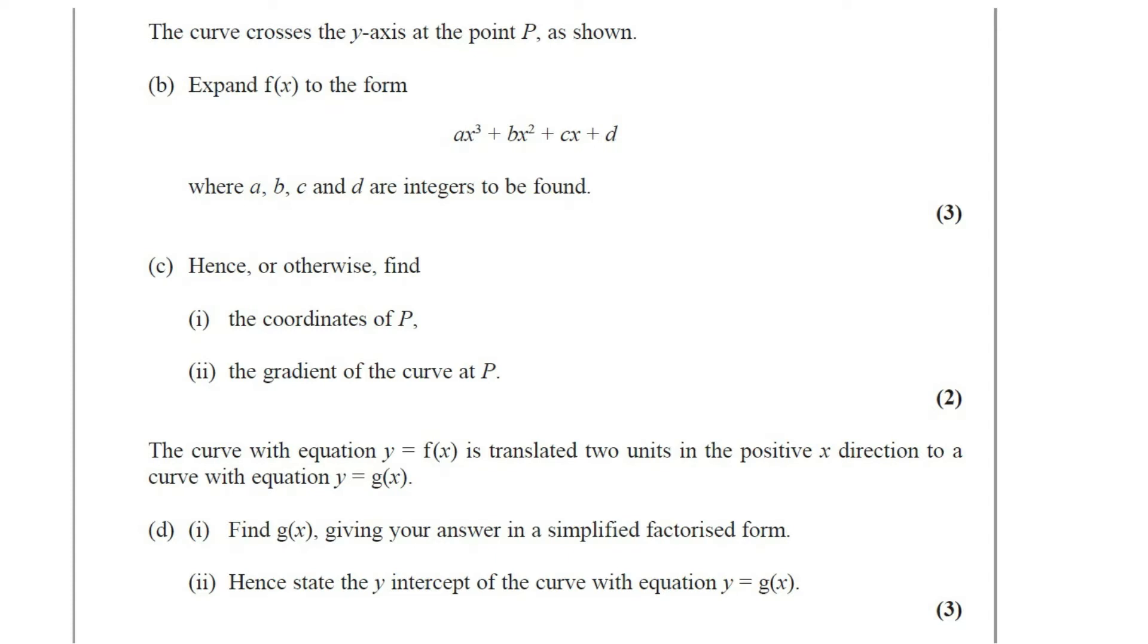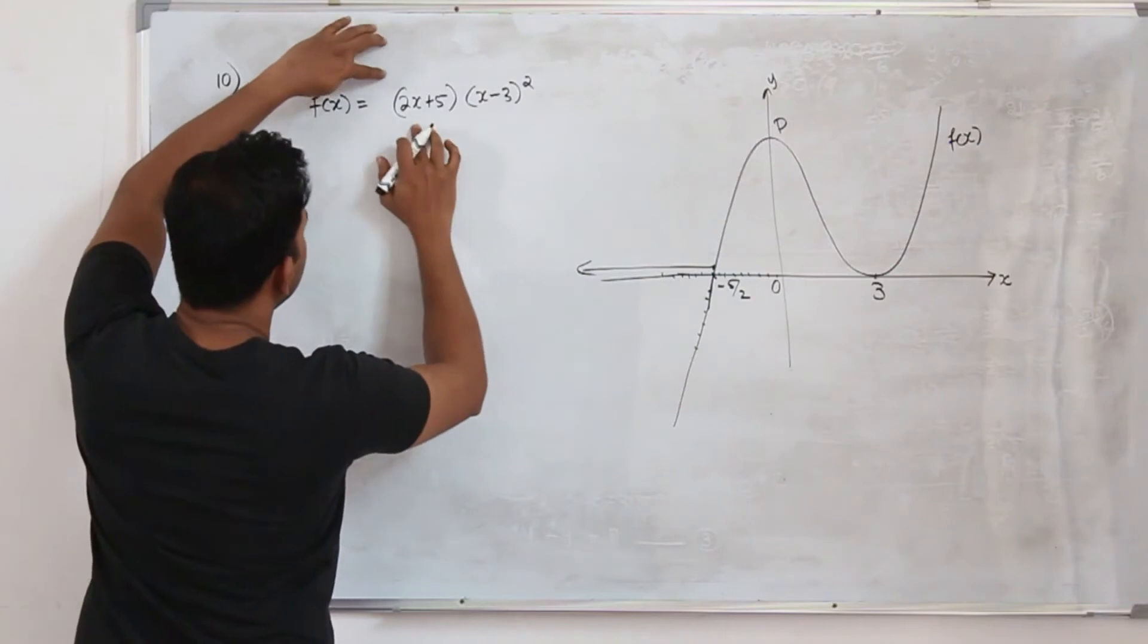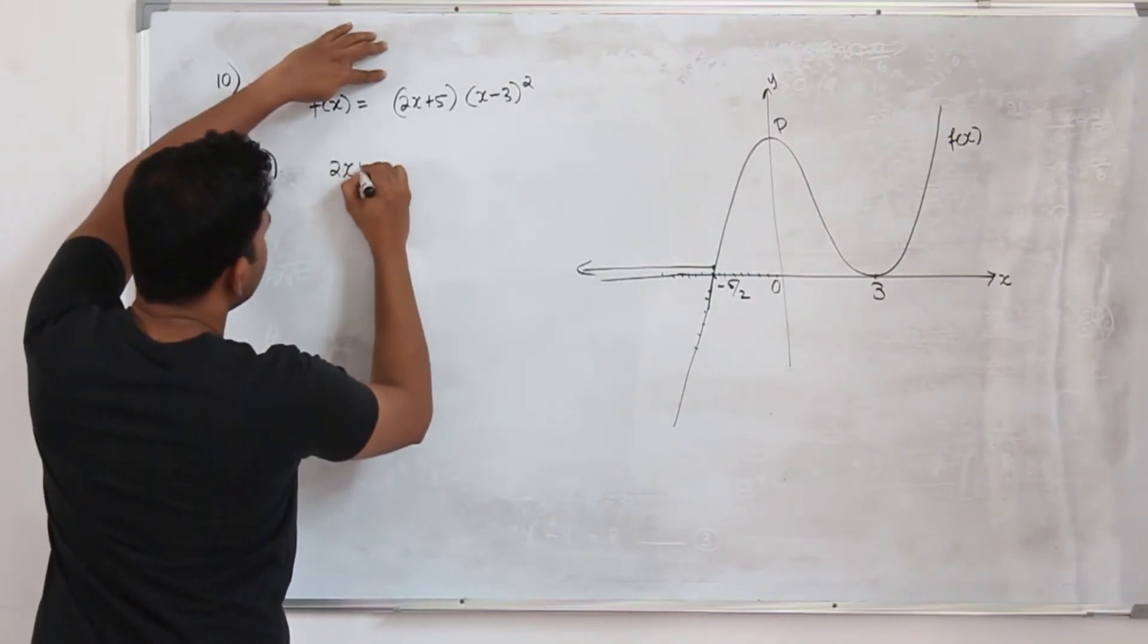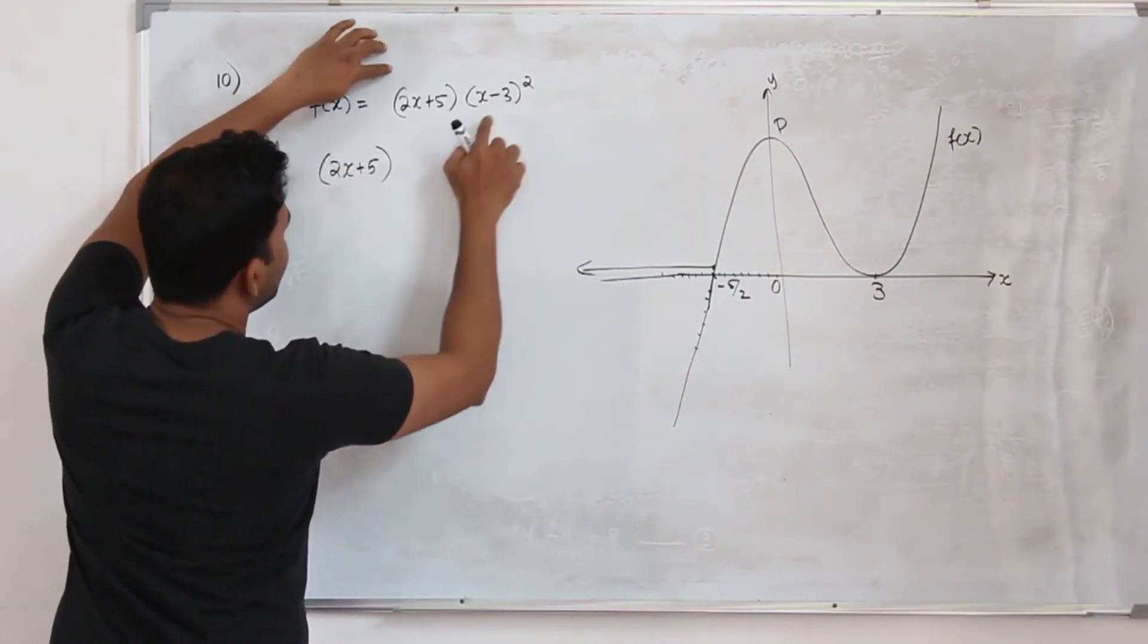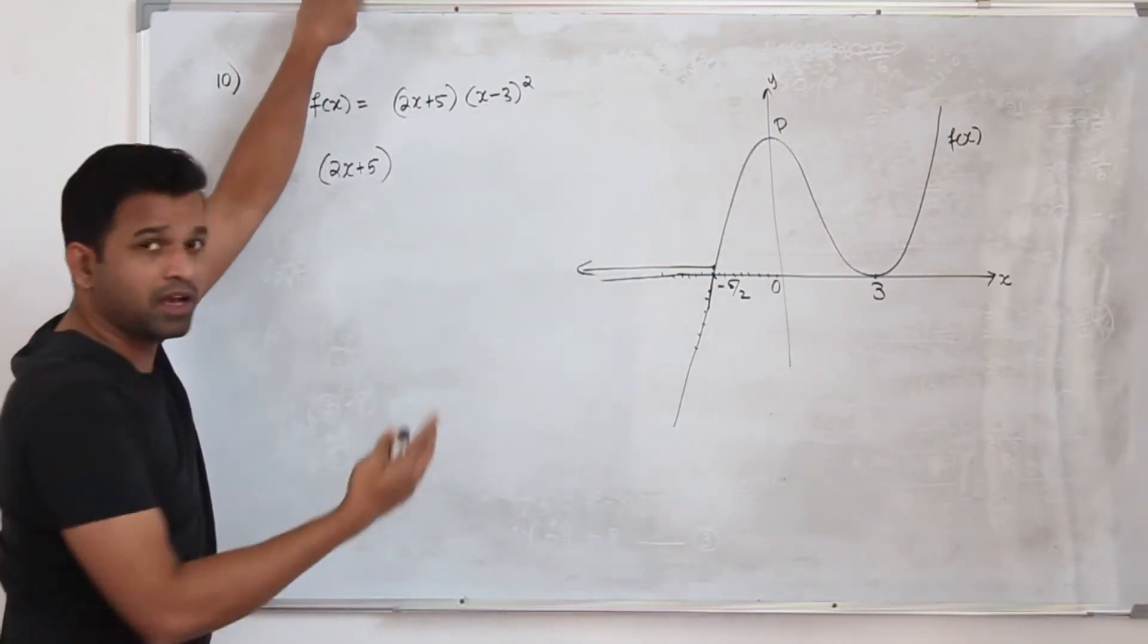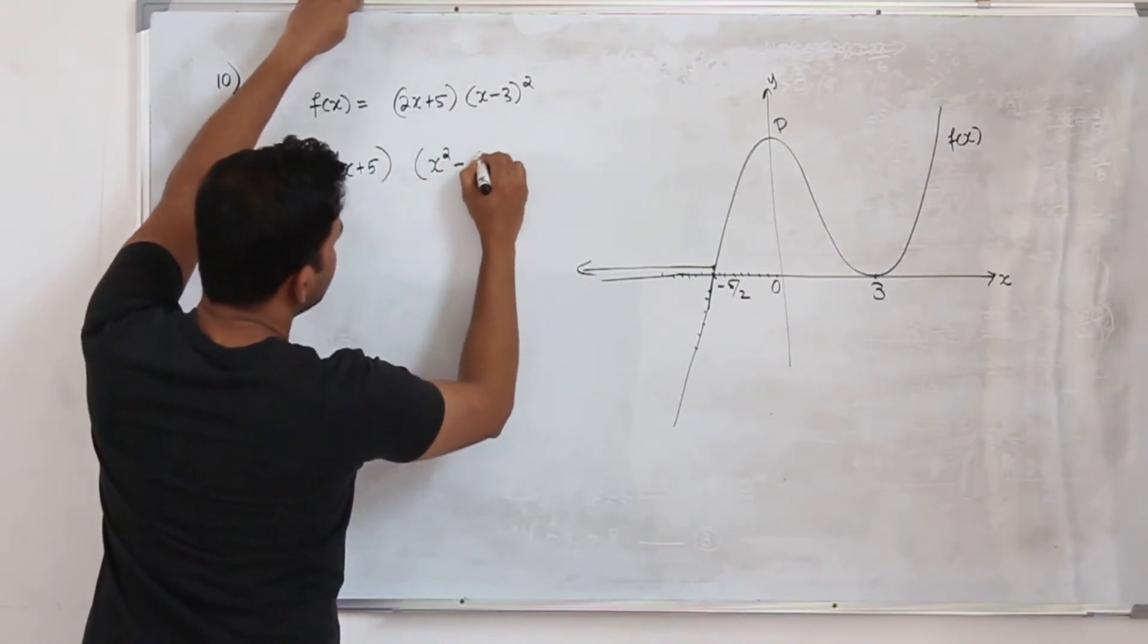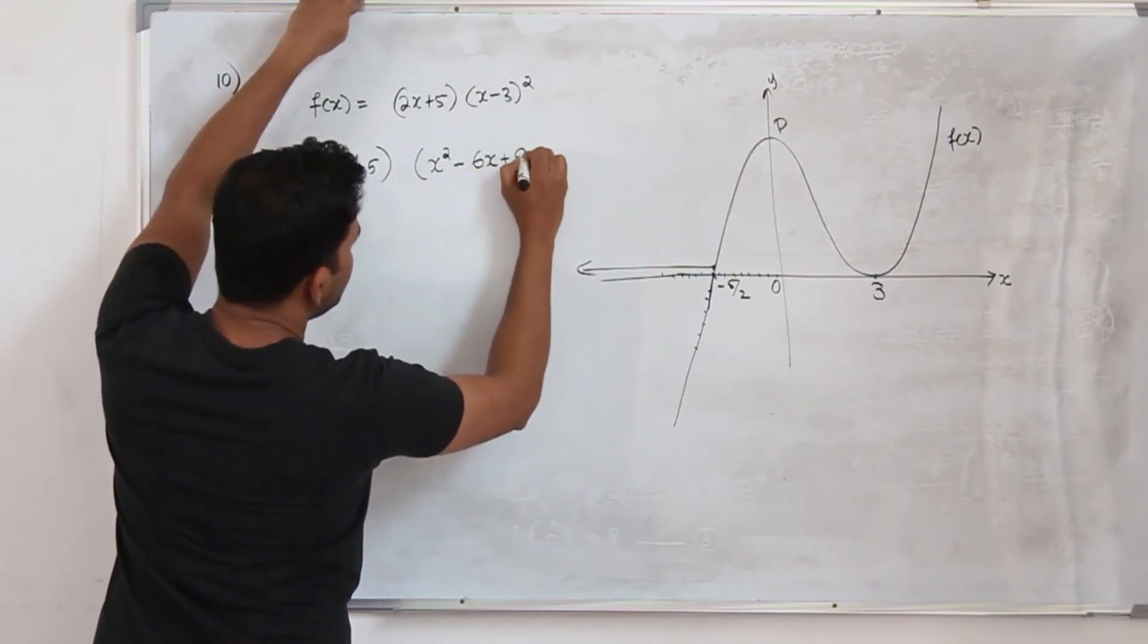Part B: Expand f(x) to the form ax cube plus bx squared plus cx plus d where a, b, c, d are integers. This question carries 3 marks. So here we are going to remove the brackets and expand them. Keep 2x plus 5 as it is, and write it as 2 brackets and multiply them, or you can apply the algebraic identity a minus b whole square, which is a square minus 2ab plus b square.